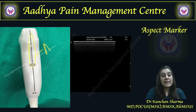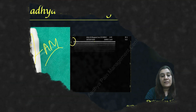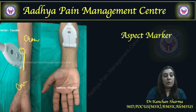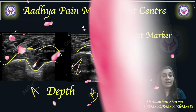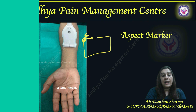This is the aspect marker on my probe, and the same thing is indicated on the screen. If I am looking at the screen where the aspect marker is, this side will become cranial, as you can see here.